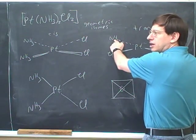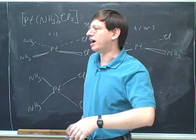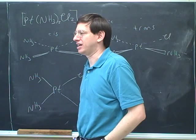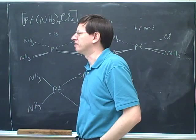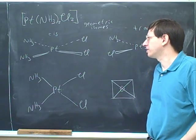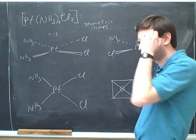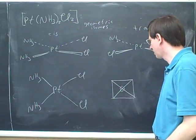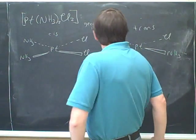It should make sense that this is square planar and this is in the center of the square. We know that squares have lots of 90 degree angles. So the angle between these two ammonias is 90. What's the angle between the ammonias here? 180. So I think that's a good practical way to tell the difference between cis and trans. When things are trans, they have a 180 bond angle. And when they're cis, they have a 90 degree bond angle.